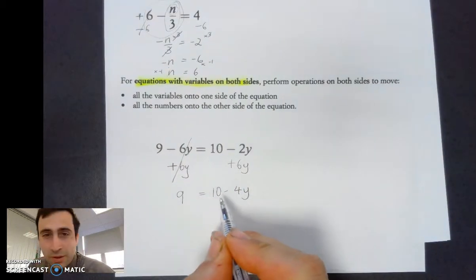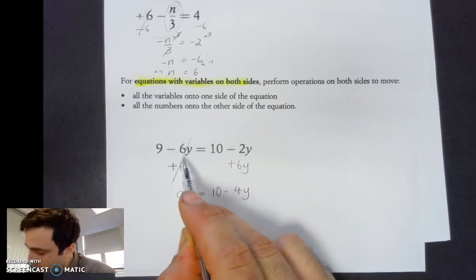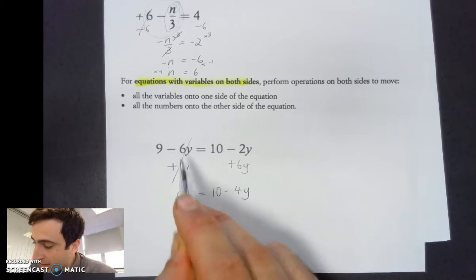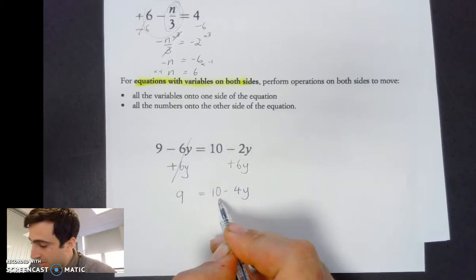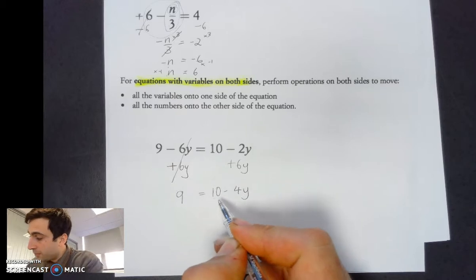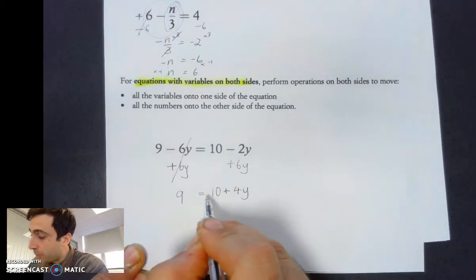Now, what we've done is we've effectively taken the y's from this side and moved them over this side by subtracting one side. Now, I do the same with the numbers. Sorry, that's a positive 4y. 9 equals 10 plus 4y.